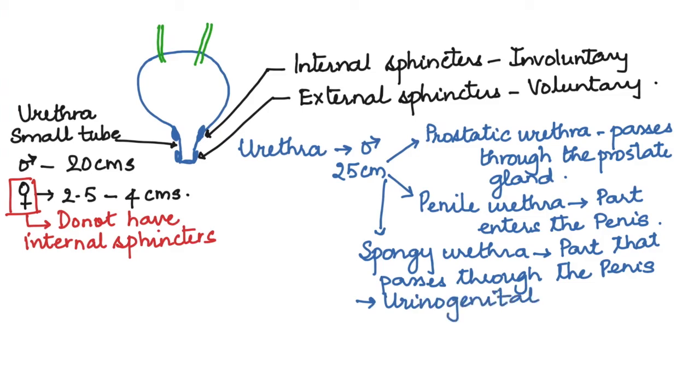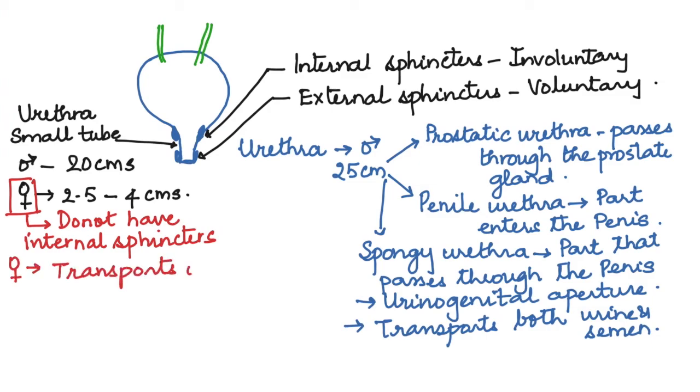It opens through a urinogenital aperture, and the urethra in males transports urine as well as semen. In females, the urethra transports only urine and the opening is called the urethral orifice.